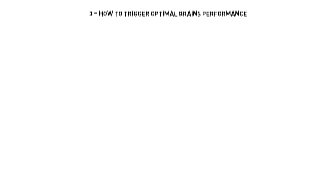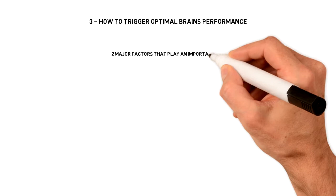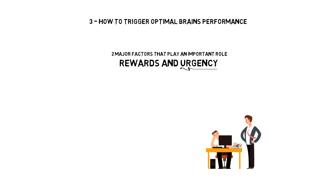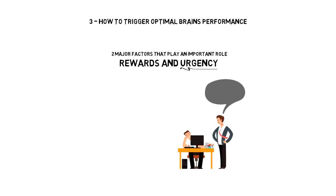Number three, how to trigger optimal brain performance. Two major factors that play an important role in order for our brain to function with optimal performance are rewards and urgency. Let's start with urgency. When there is no urgency, then you are not likely to perform well. So how can you create urgency in your life? It's simple.